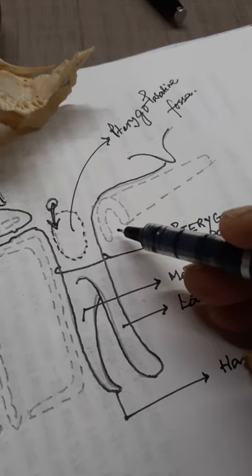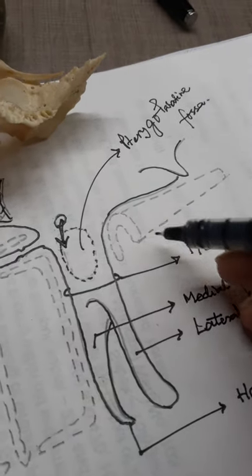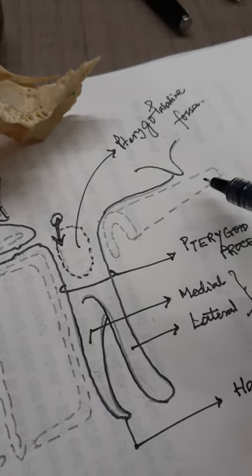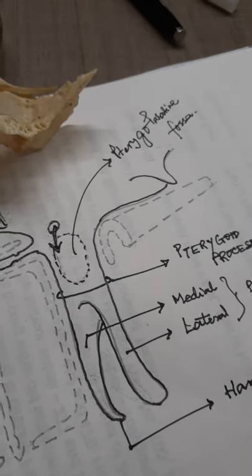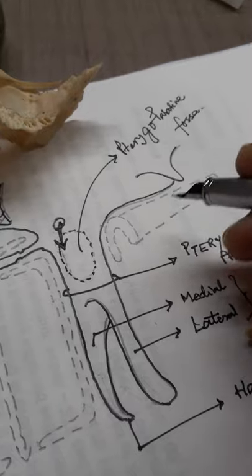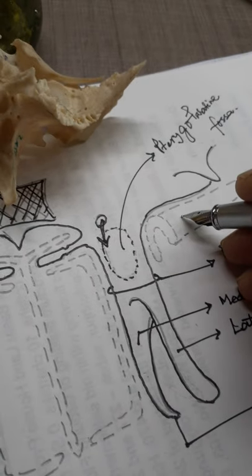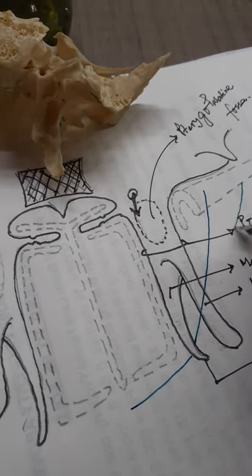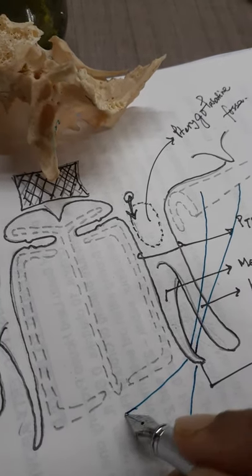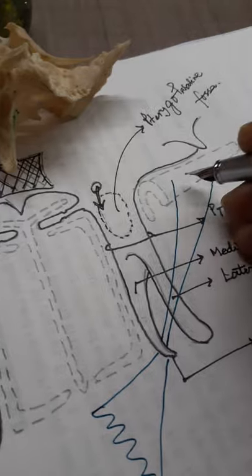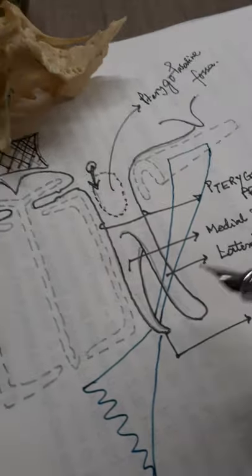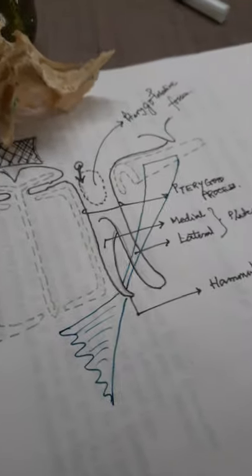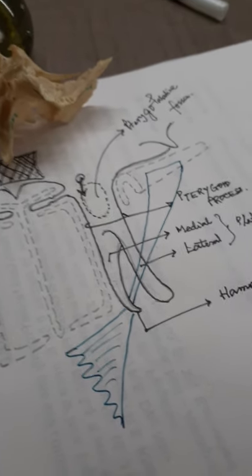On the sides, the lateral plate is related to the auditory tube. From the auditory tube, there is origin of the tensor veli palatini muscle. This tensor veli palatini takes origin from the side of the auditory tube, then hooks around to help make the soft palate.